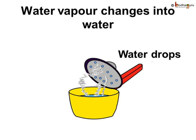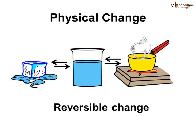This change can be reversed by reversing the conditions. If we cool water vapor, it turns into water, and if we heat ice, it becomes water again. This kind of reversible change is called physical change.